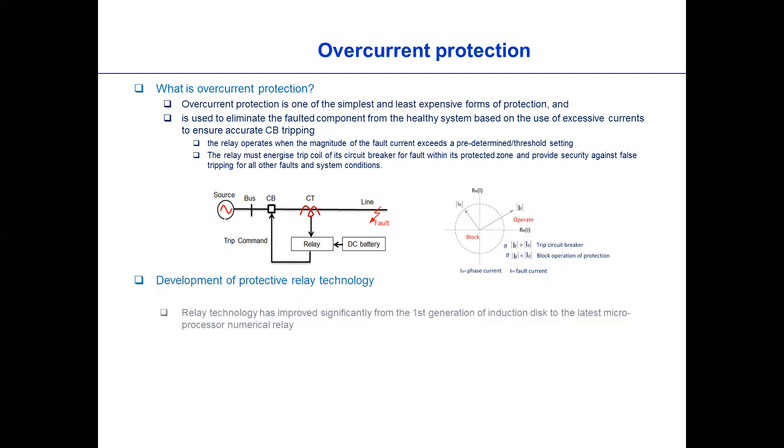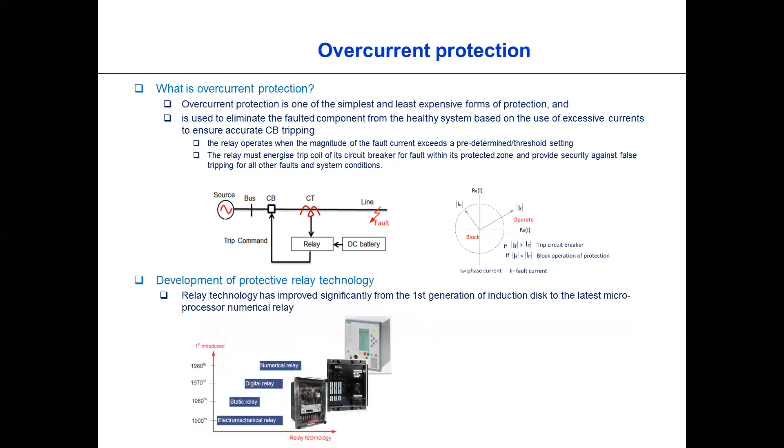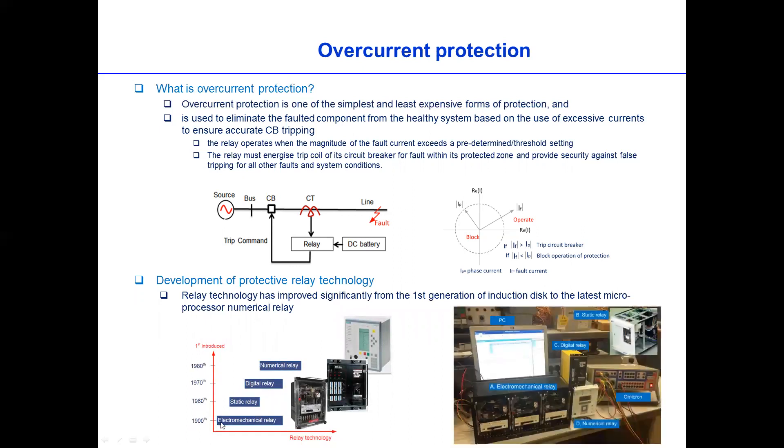So if you look at this one as well, there is a relay evolution or development in the market. For example, the first relay developed was back in 1900. It was called electromechanical relay. It works with a 3D induction disk, a rotating disk inside. Then since the 1960s, another static relay became available and then this advanced into digital relay in the 1970s.